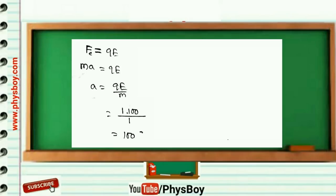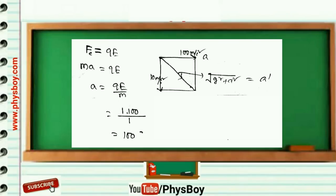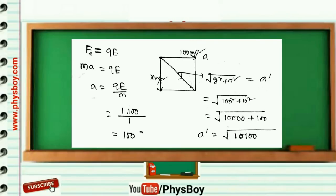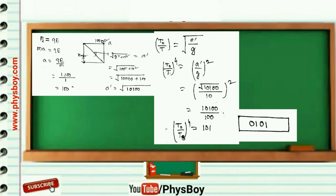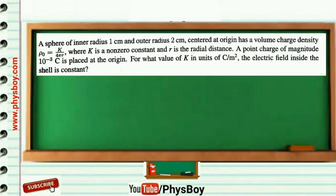The force on the bob due to the electric field is qE = ma, so putting in the values of q, E, and m, we get a = 100 m/s² along the x-direction. We have two accelerations: g = 10 m/s² along y and 100 m/s² along x, so the resultant acceleration a′ = √10100. Then T₀/T = √(a′/g), and simplifying, the final answer is 0010.